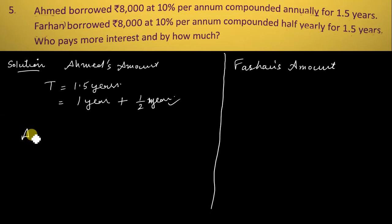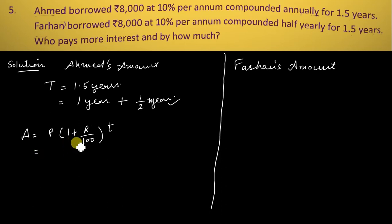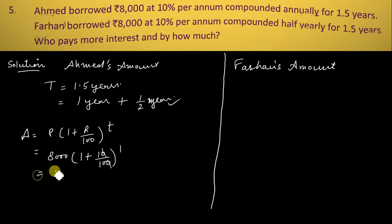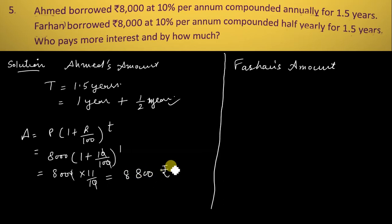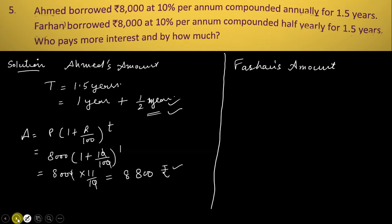For Ahmed's first year: Amount = P into (1 + R/100) into T. Principal is 8,000, rate is 10%, time is 1. After cancellation: 8,000 into 11/10 equals ₹8,800. This amount of ₹8,800 becomes the principal for the next half year calculation.